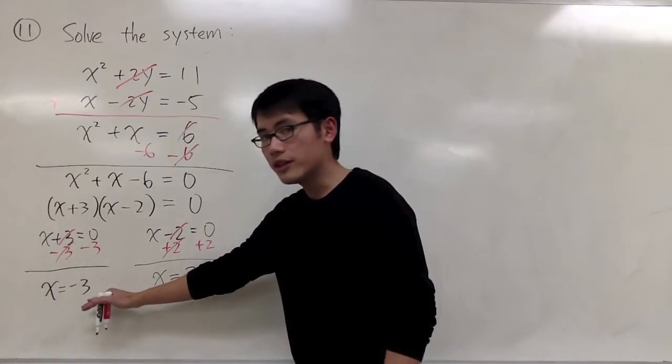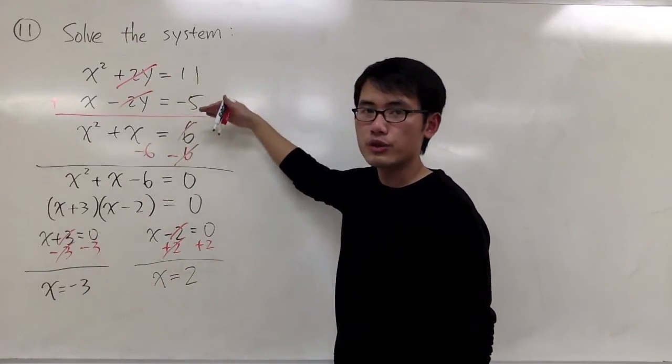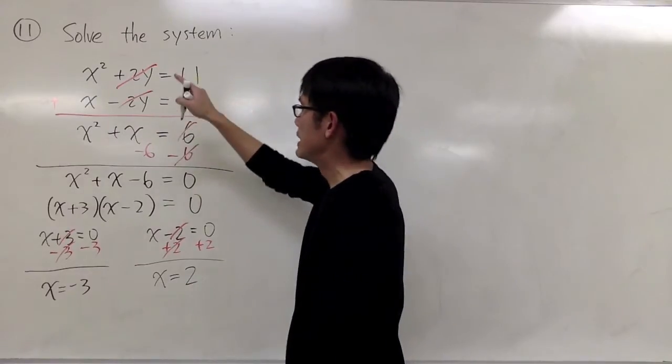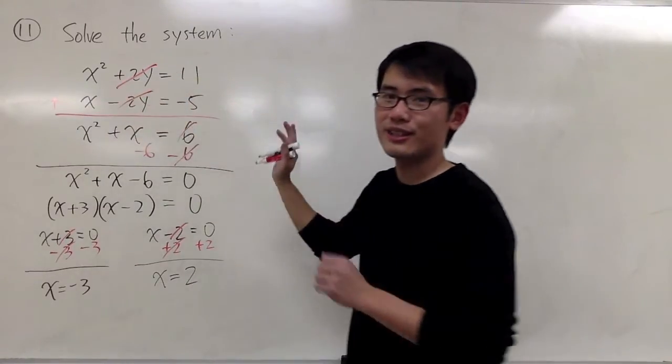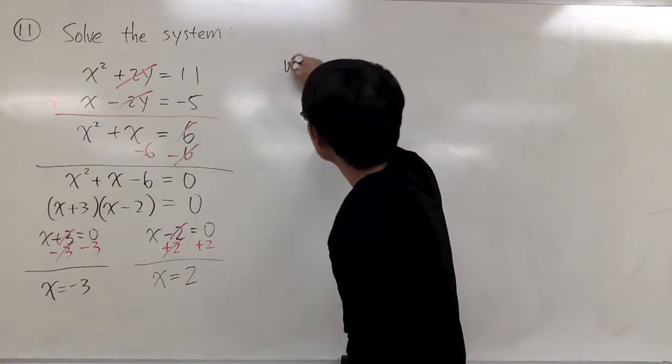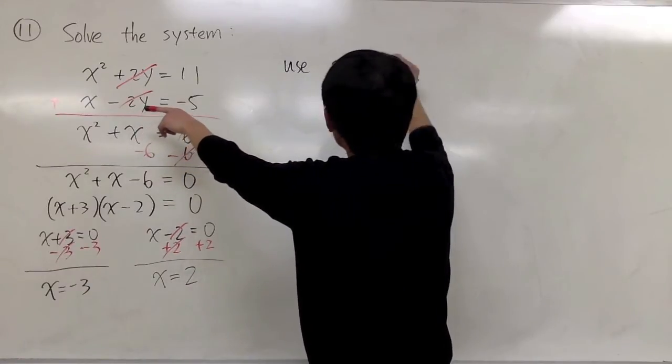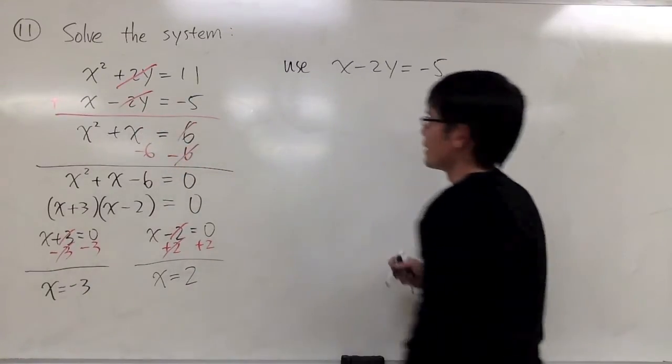And in this situation, it doesn't matter which equation, which original equation you plug it back. It seems like the first one has a square. Let's not touch that. Let me use the second one. It doesn't really matter. I'll just use the second one, x - 2y = -5.